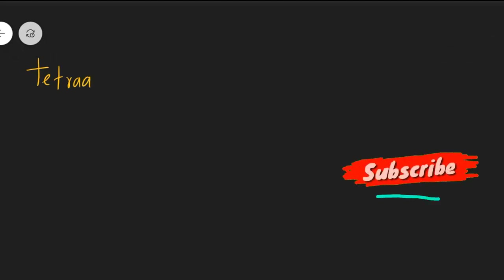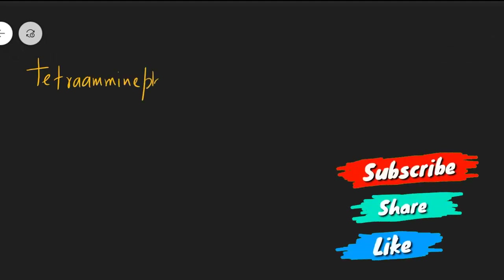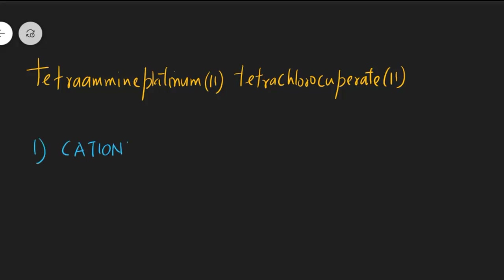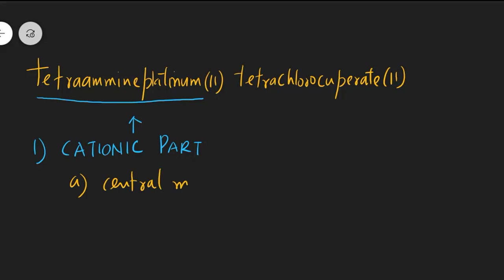Today let's start with a problem in which the cation as well as the anion are both complex in nature. The example is tetra amine platinum 2 and tetrachlorocuprate 2. This name comprises two parts: the first part, tetra amine platinum 2, is the cation, and tetrachlorocuprate 2 is the anion. Let's name the cationic part first.